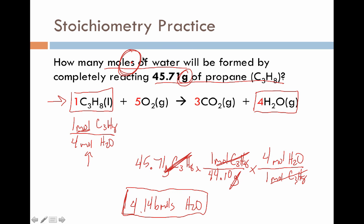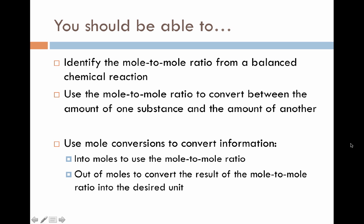Had the problem been more complex, it might have asked for an answer in units other than moles, requiring a third conversion step. At this stage, you should be able to identify mole-to-mole ratios from a balanced chemical reaction, choose the appropriate ratio for your problem, and use it to convert between amounts of substances — which is really just regular dimensional analysis. The key is putting it all together: convert into moles so the mole-to-mole ratio can be used, then convert out of moles to whatever unit the problem requires. We'll practice many more of these in class, but you should now have a solid understanding of how stoichiometry works and what its purpose is.